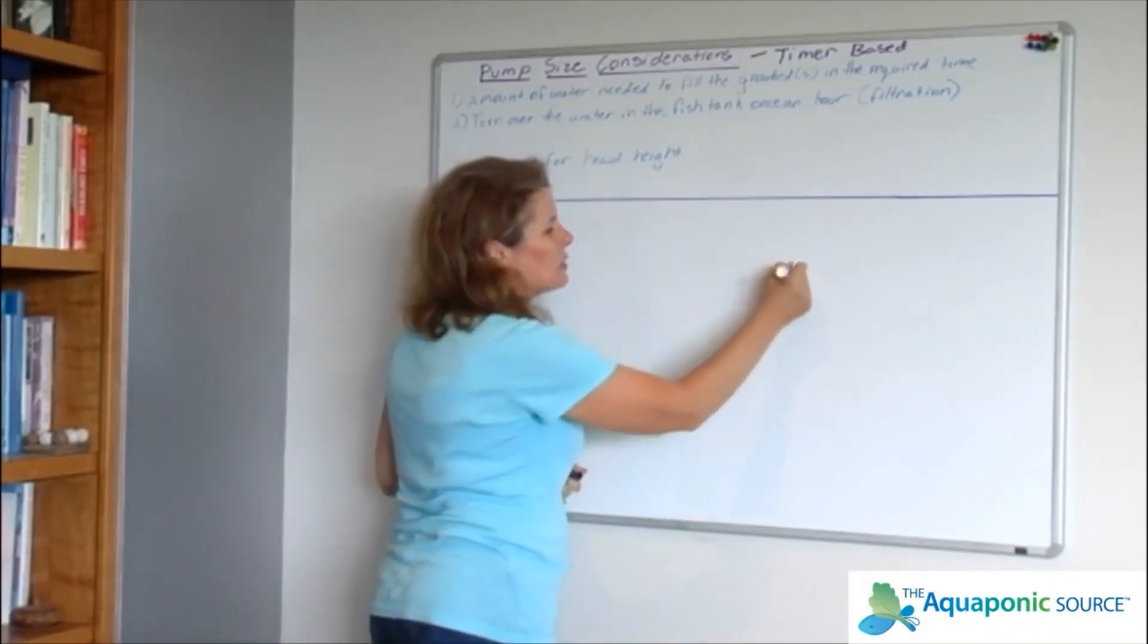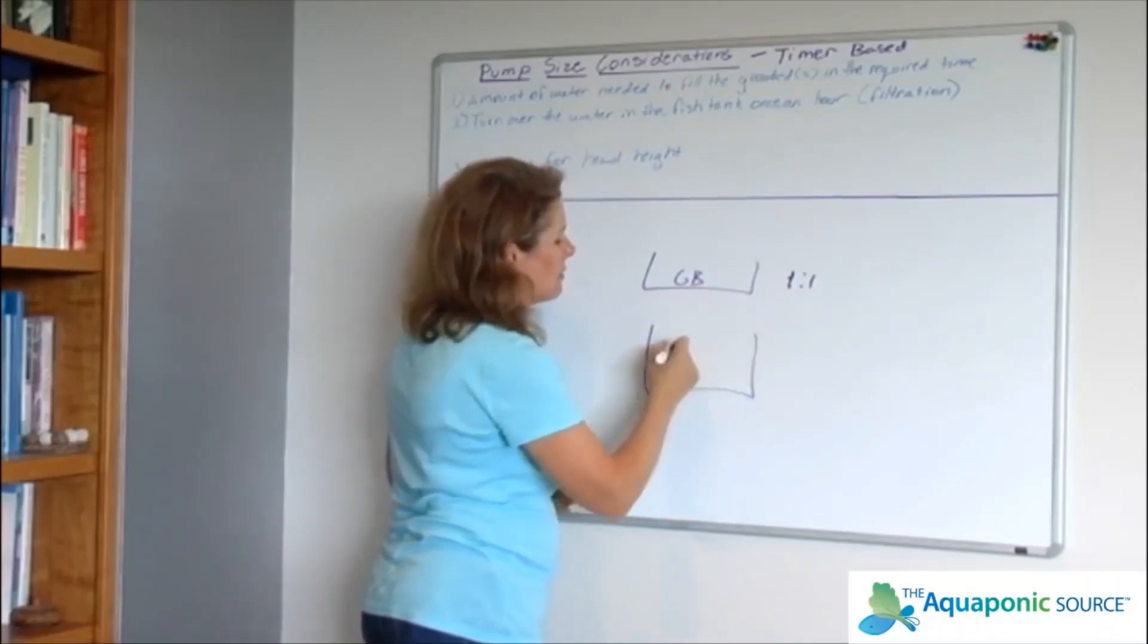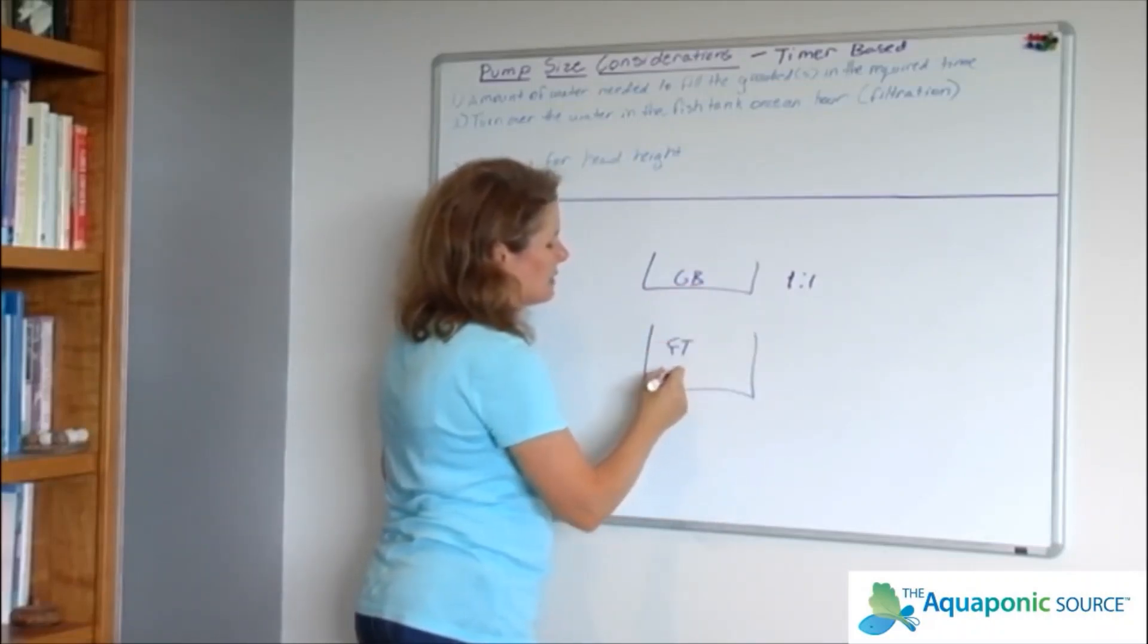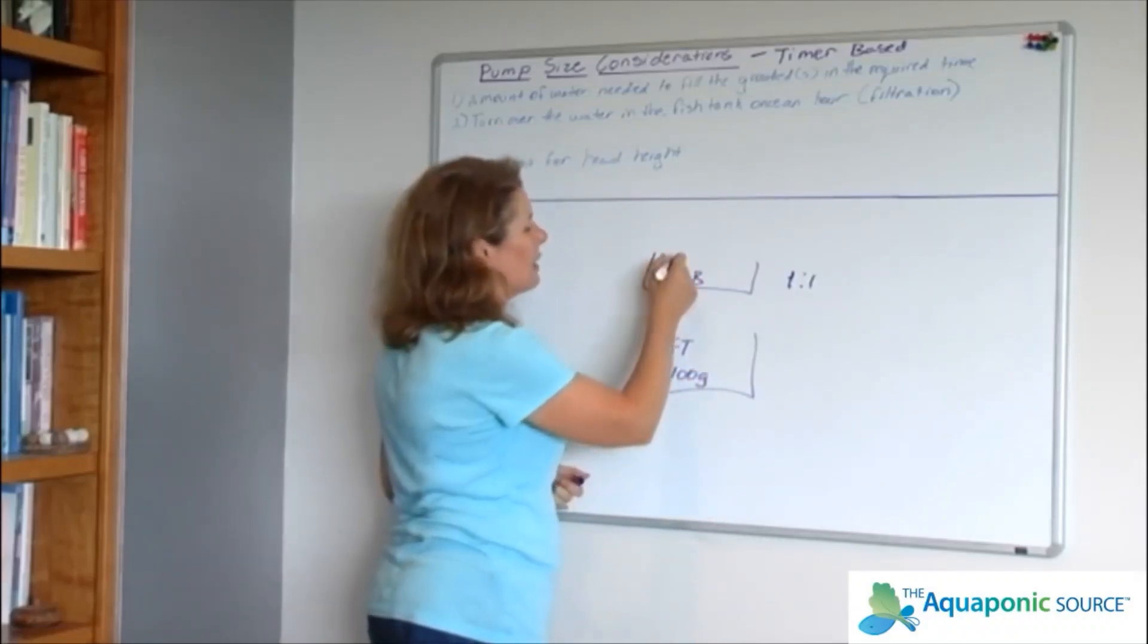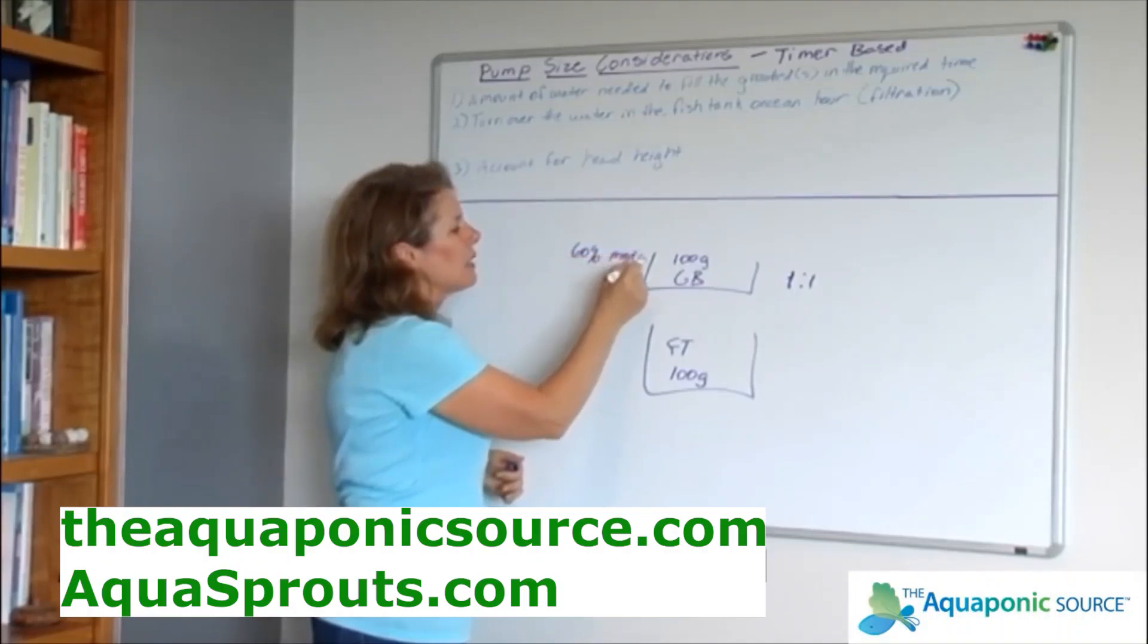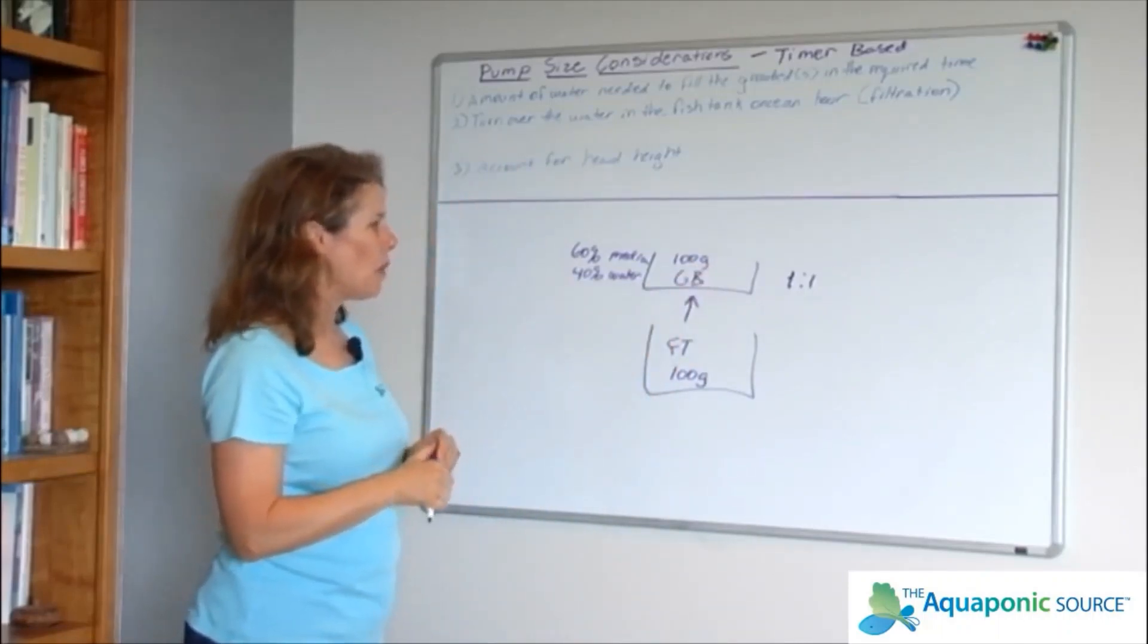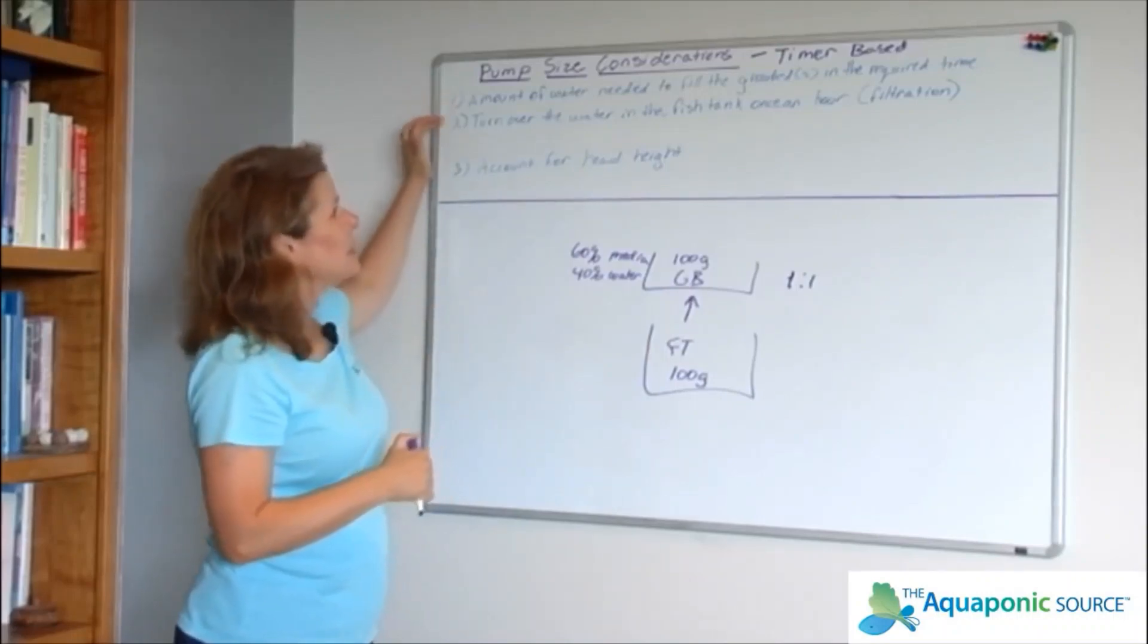Let's start back with our really simple one-to-one ratio of the volume of the grow bed to the volume of the fish tank. Just to keep our lives really simple, we're going to say that we've got a 100 gallon fish tank and a 100 gallon grow bed. Now remember that in the grow bed, 60% of that volume is going to be filled with media, 40% will be filled with water. Whenever you run your pump, up to that standpipe you're going to have 40% water.